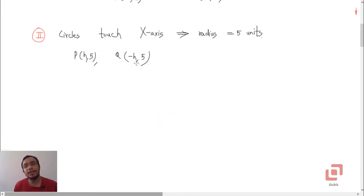In part 2, we will try to determine the x-coordinate. As we already discussed, the circles touch the x-axis. So, radius is equal to 5 units. So, let us assume that the centers have their x-coordinates to be positive h and negative h respectively. And this is obvious now because you now know that there will be two circles. One whose center will be in the first quadrant and the other one will have its center in the second quadrant.